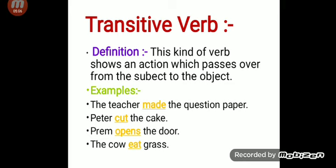The question paper is an object. The cake is an object. The door is an object. Grass is also an object. So made, cut, opens, and eats are all connected directly to the object. That's why they are transitive verbs.